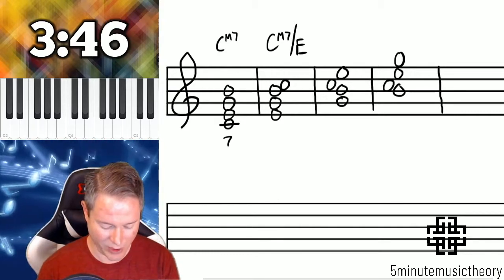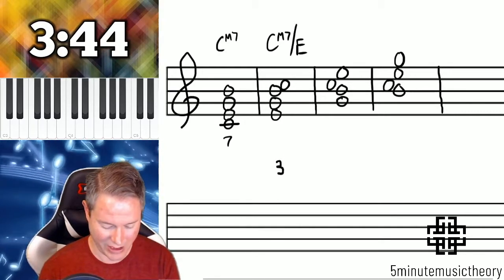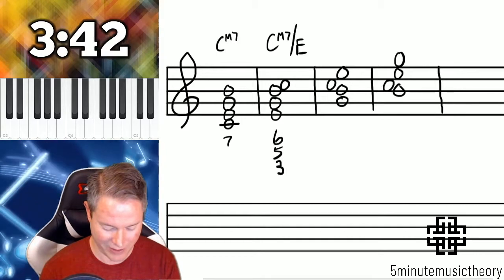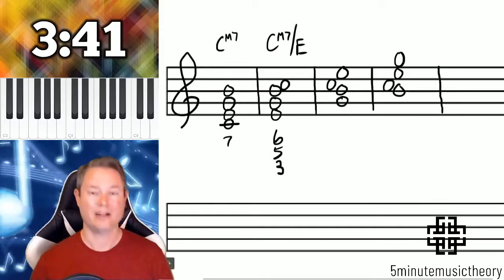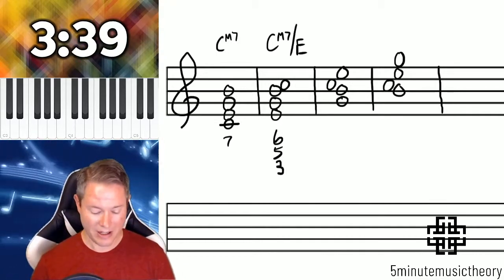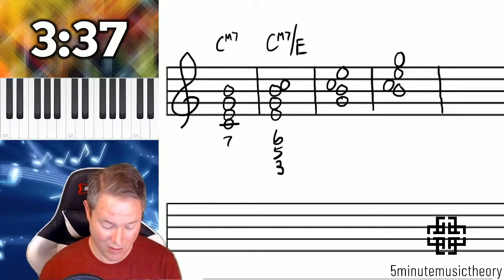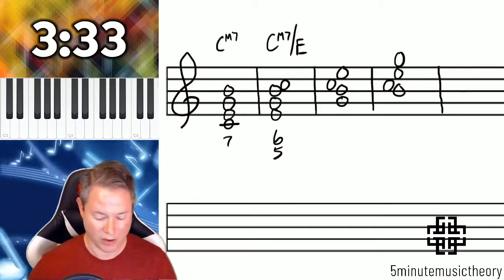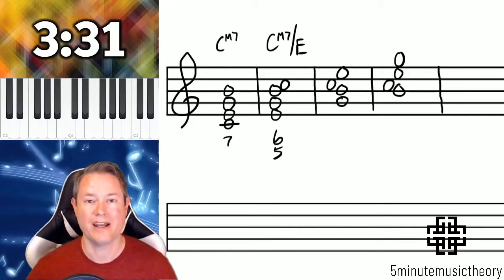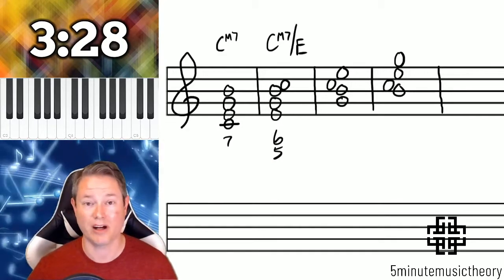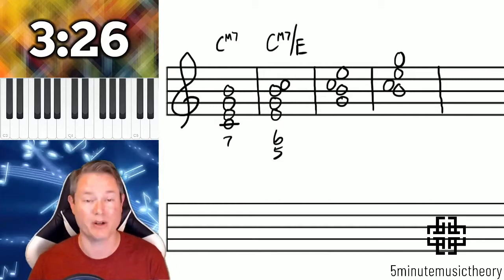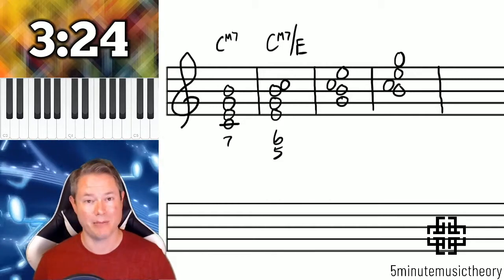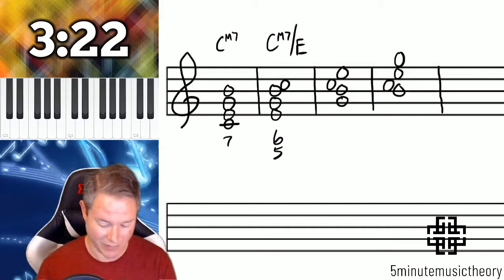Now the first inversion, if we look above the bass, we have a three, we have a five, we have a six, all three of those in there. Now we abbreviate this as well by taking the three out and leaving the six five. So first inversion seventh chord has a bass position symbol or figured bass symbol of six five. So if you ever even hear me refer to a six five chord, that means that it's a seventh chord in first inversion.